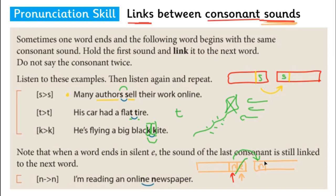So these two words are linked when we pronounce them. Let's listen to the final example: 'I'm reading an online newspaper.' We connect and join these two words. That's the skill: if a word ends with a consonant sound and the next word starts with a consonant sound, then we link and join and connect these two words when we're speaking. Thank you for watching this video, and I hope you learned something.